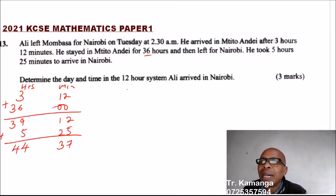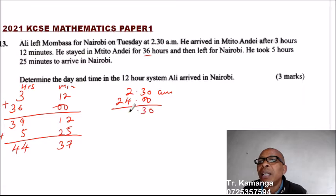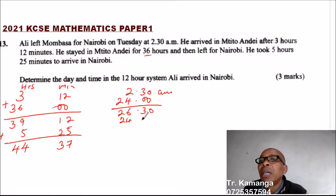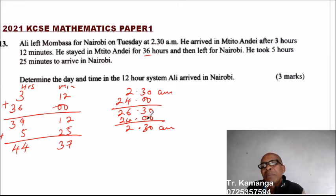He had left Mombasa at 2:30 AM. If you add 24 hours — that's a whole day — you get back to 2:30 AM, which means that is on Wednesday. The original departure was on Tuesday.